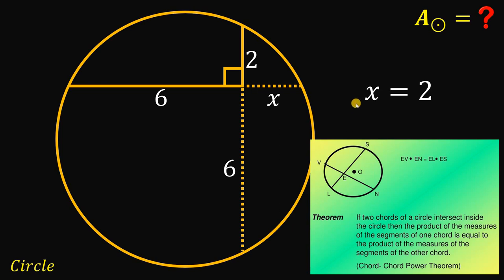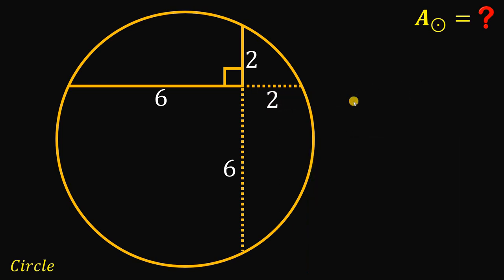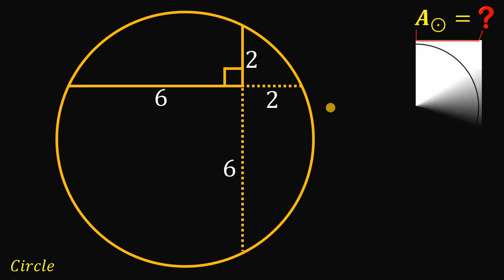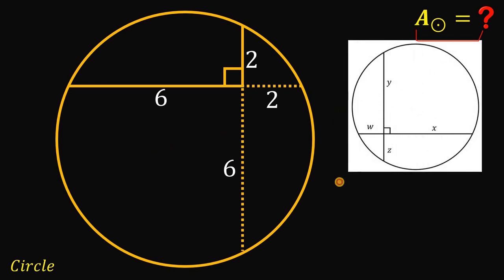Okay, so we can now finally say that x must be equal to 2. Now, from here, we can now solve for the area of the circle because we can now solve for the value of r squared because we will use this theorem that relates the radius squared and these four segments.